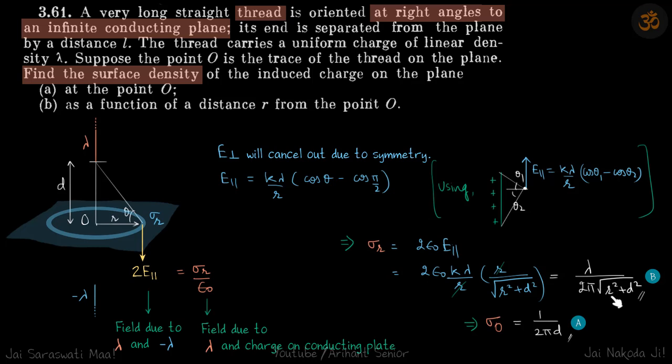In this answer, if you put r equals 0, you will get sigma at the center, at the symmetric position of this wire on the plate, will be 1 by 2 pi d.